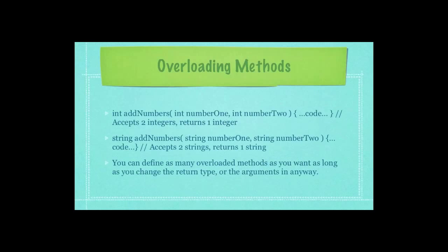Here's an example of an overloaded method. We've created two methods that both have the same name, addNumbers. One returns an int, or integer; the second one returns a string. The first addNumbers function accepts integers while the second one accepts strings. However, they both perform in exactly the same way. You can define as many overloaded methods as you want, as long as you change either the return type or the arguments in the way described.